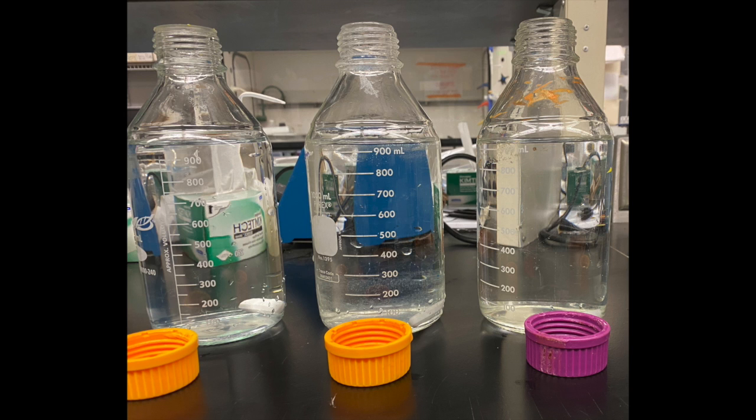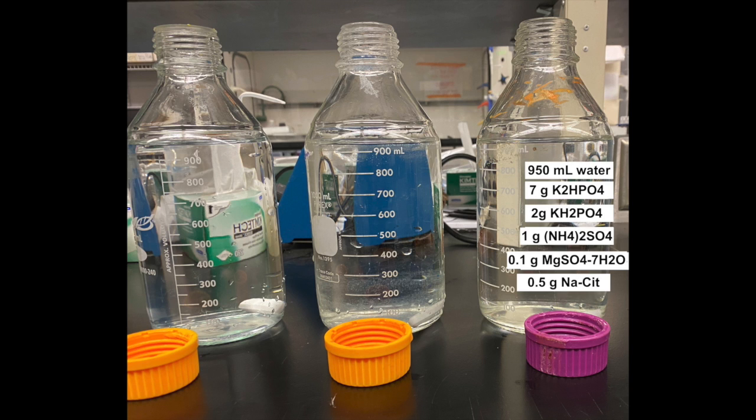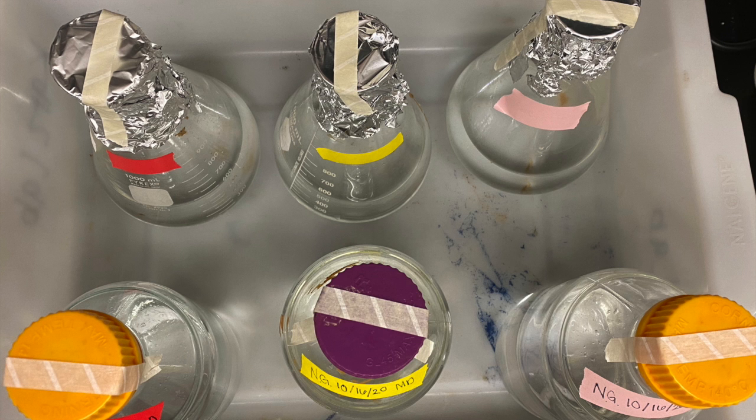Now to create the media that goes inside of the chemostat. We are going to use MD media. This media is a solution of DI water and high ionic salts. The MD solution will also need to be autoclaved in order to be sterilized.